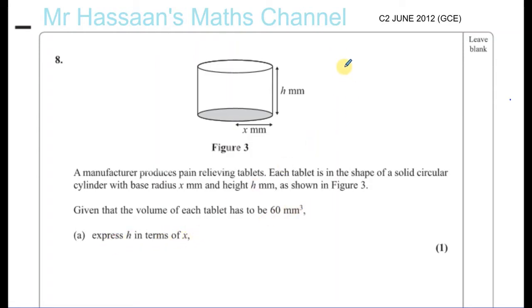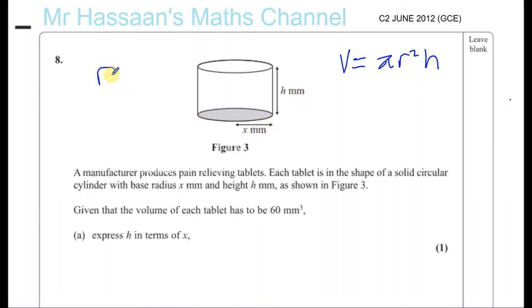The volume of a cylinder is π times R squared times H — that's the area of the cross-section. Cylinders are a type of prism with a constant cross-section, so it's the area of the base, which is a circle (πR²), times the height H. In this case, the radius R is equal to X, so the volume is equal to π times X squared times H.